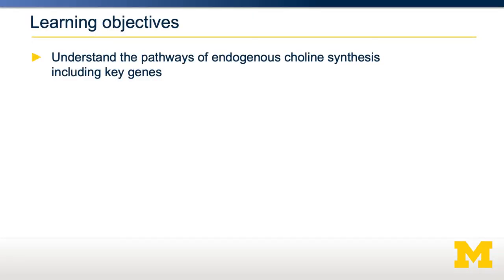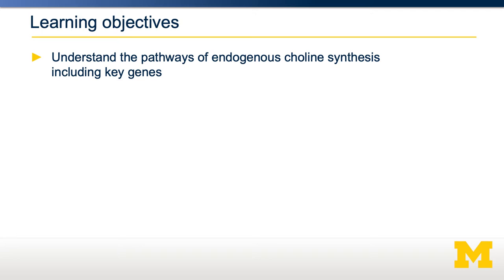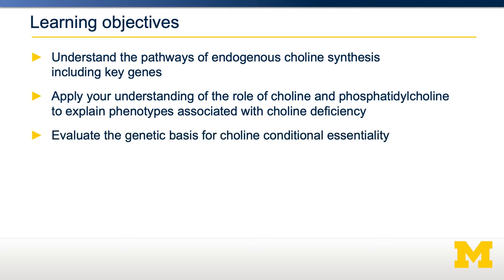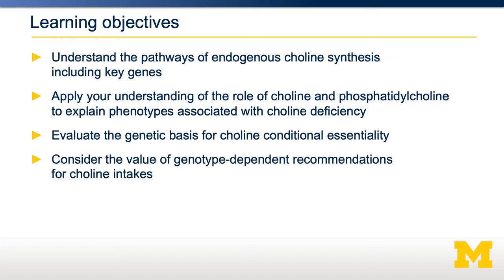We're going to talk about what choline is and how we make it, including some of the important genes. We're going to talk about what happens if you're deficient in choline and how that pathophysiology arises. We're then going to talk about the genetic basis that can underlie conditional essentiality of choline, and then use that to talk about genotype-dependent recommendations for choline intake.